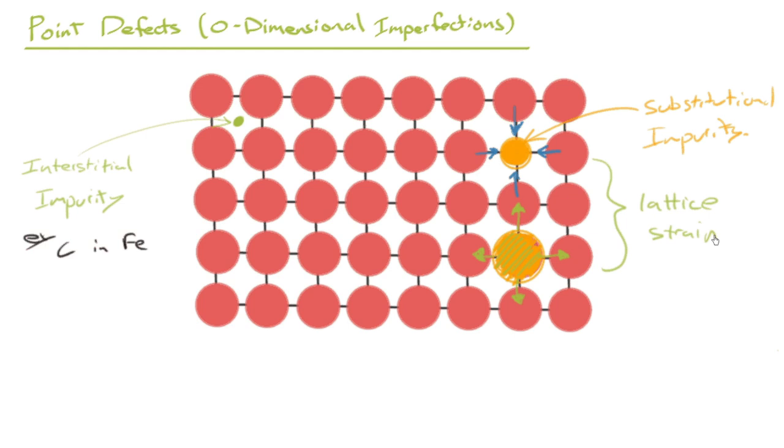So the other thing that we could see is you may have situations where the atom is just missing altogether. Like this. And just for clarity, I'll remove these bonds. And there's a lattice site with no atom. And that is, as well, a type of impurity, or a point defect. It's an imperfection, I mean. And that's called a vacancy. There's a vacant atom site. So these are all different types of point defects.